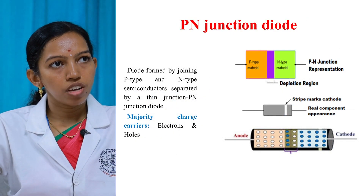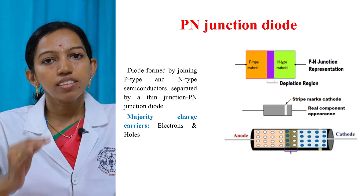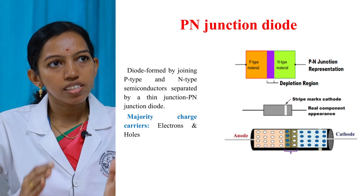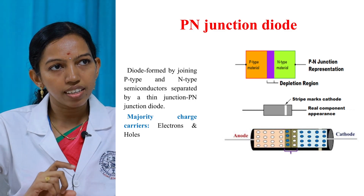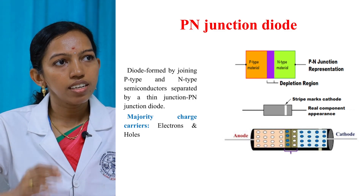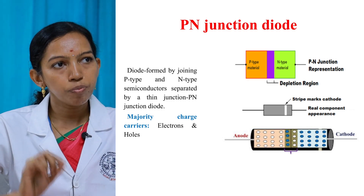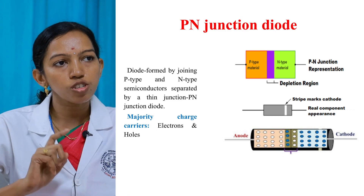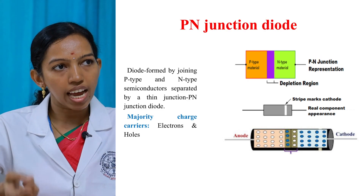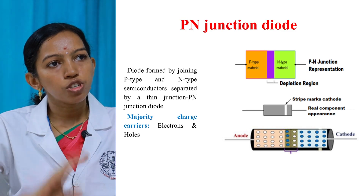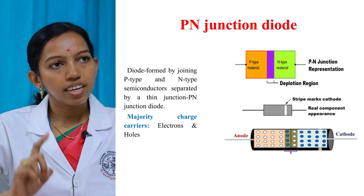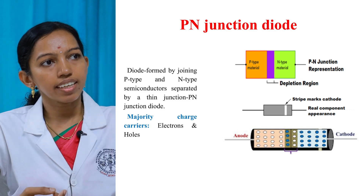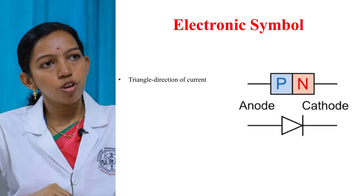Now let us move to the topic P-N junction diode. A P-N junction diode is a two-terminal semiconductor device obtained by joining a P-type semiconductor material and an N-type semiconductor material, separated by a small junction called the depletion region. The P-N junction diode consists of two electrodes: the positive electrode called the anode and the negative electrode called the cathode. The majority charge carriers in P-type are holes and in N-type are electrons. This is the electronic symbol of a P-N junction diode.